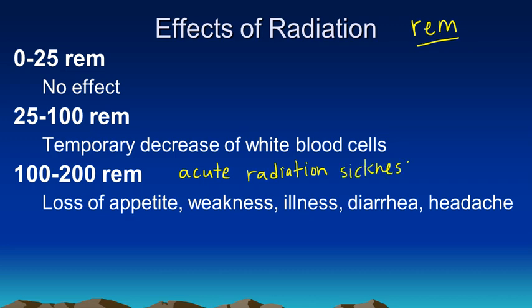What you'd see is the person would start to lose their appetite. If they were able to eat anything, they probably wouldn't be able to keep it down, to be honest. They'd feel very weak, very lethargic, just symptoms of diarrhea, very severe headache, vomiting. This is a very severe acute radiation sickness.